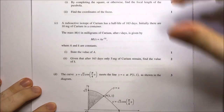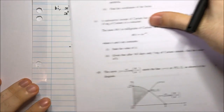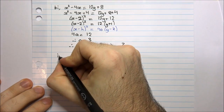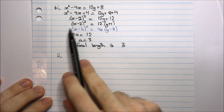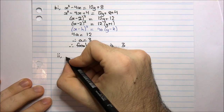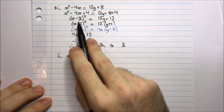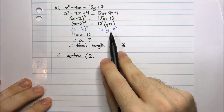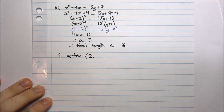The next part is to find the coordinates of the focus. From my standard form, I can easily read off the coordinates of the vertex. h is 2 and k is negative 1 — pay attention because we have a negative here and a positive here, so that's why k is negative 1.